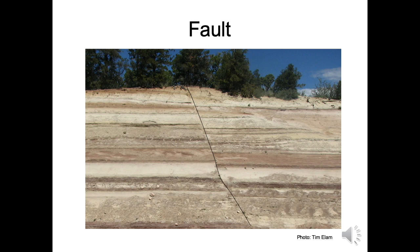Another common rock reaction to stress is to break. When rocks break and one body of rock moves up, down, or laterally relative to another rock, the broken surface is called a fault. In the slide, multi-colored shales are offset by a small one-foot fault shown by the black line. The layers on the right side of the photo are lower than those on the left side. Like folds, faults can be small or very large. There are many faults and folds beneath the San Joaquin Valley that we cannot see.